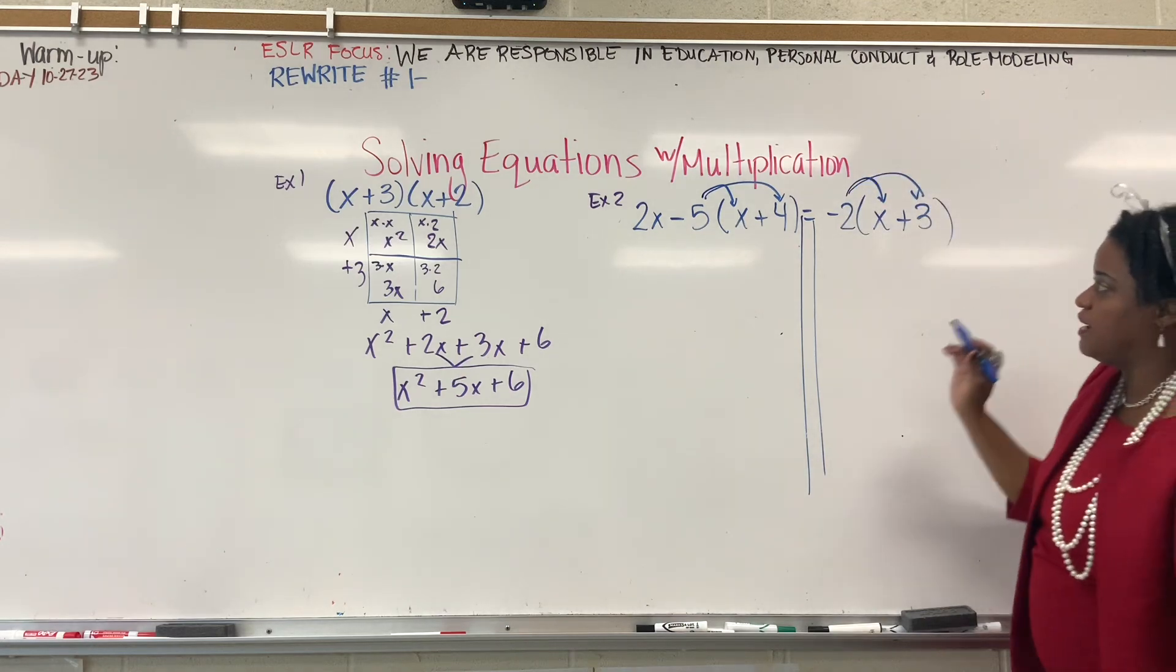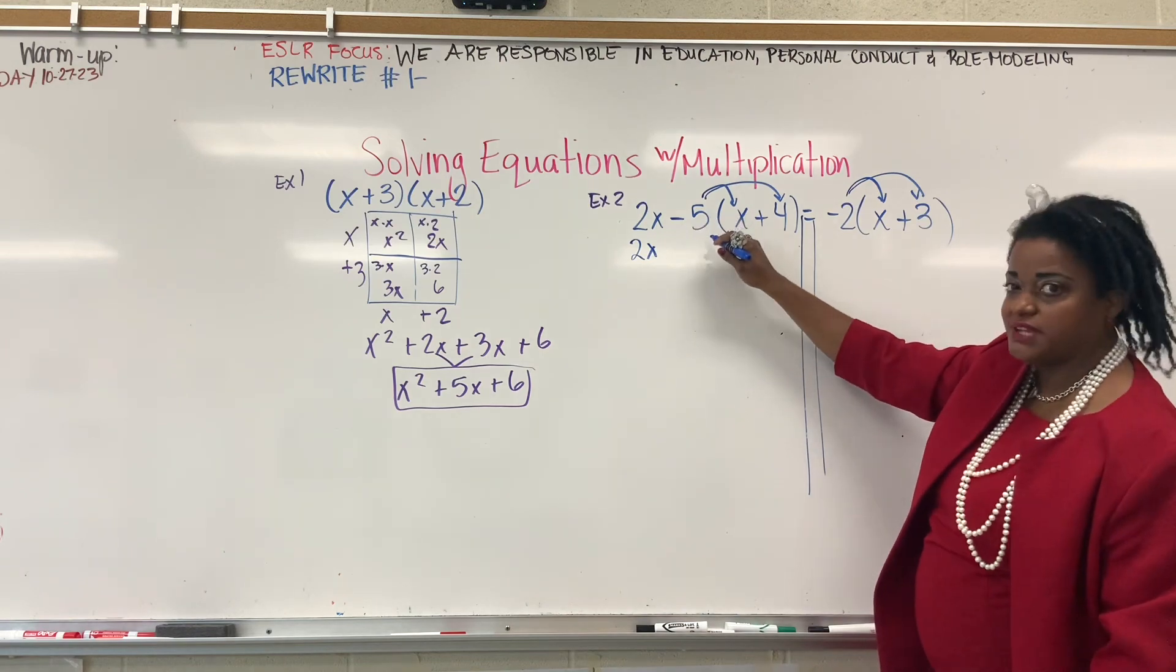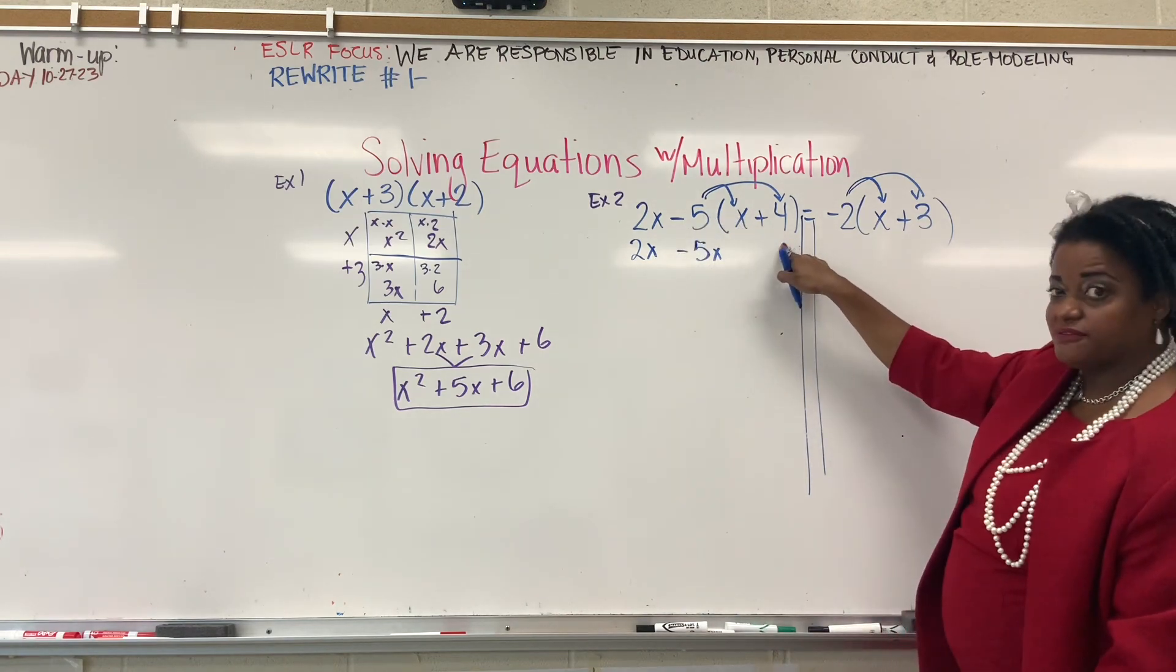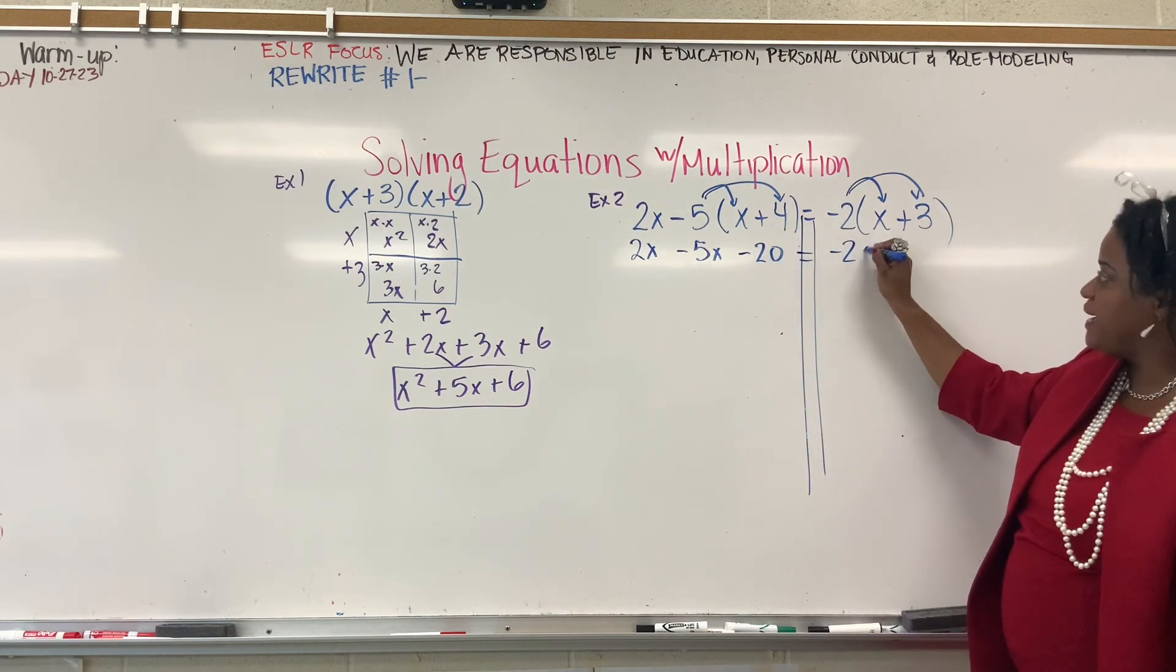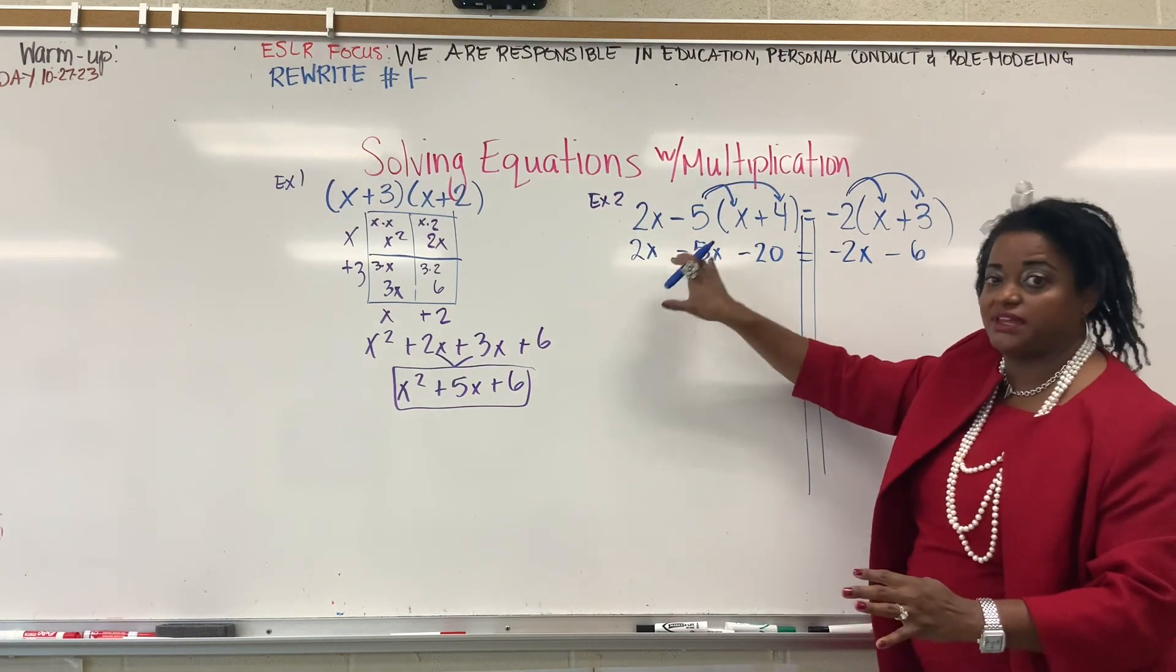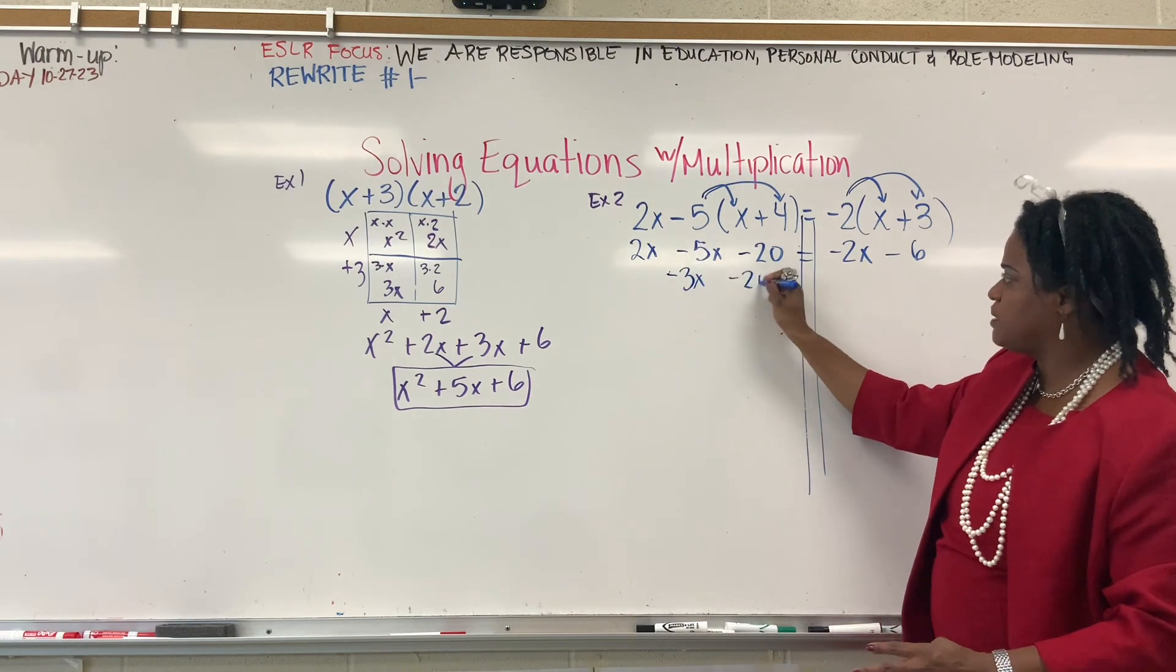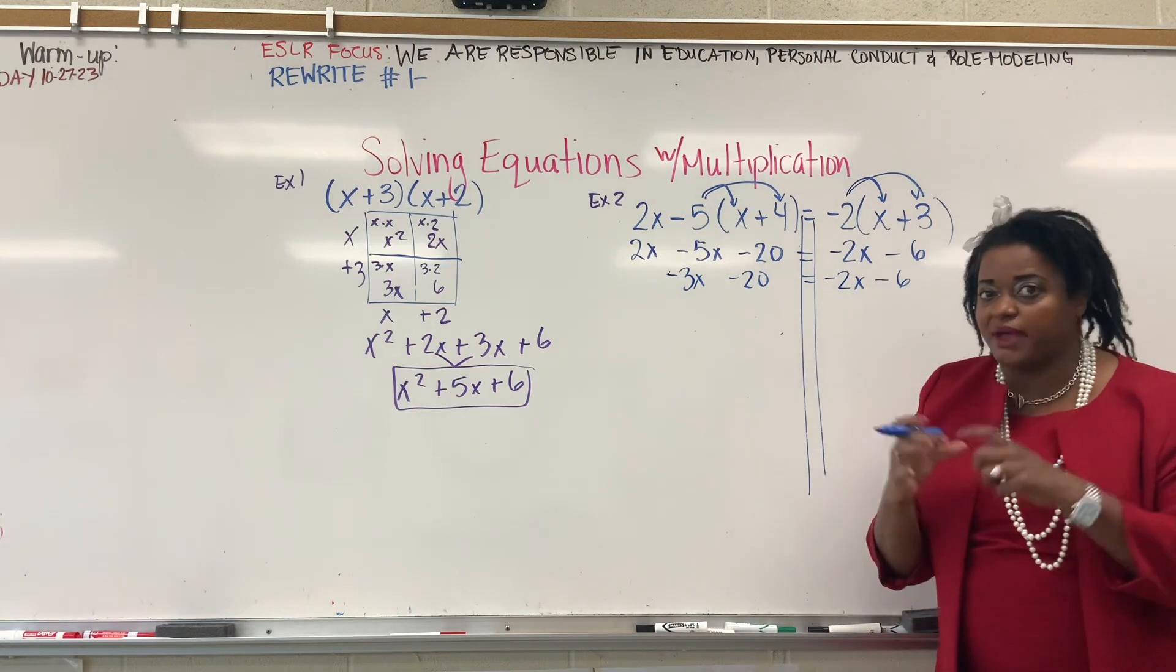I'm going to do it in one step. 2x stays the same. Negative 5 times x, negative 5x. Negative 5 times 4, negative 20, equals negative 2x minus 6. Now, I like to get all the x's on the left, so I'm going to combine these and keep them here. And this is negative 3x minus 20 equals negative 2x minus 6. So you want to combine like terms first.